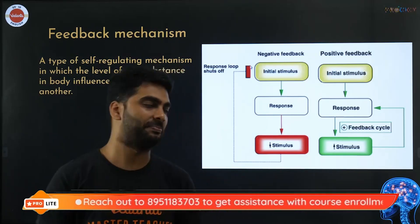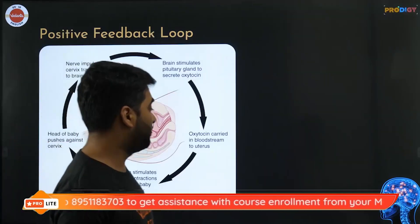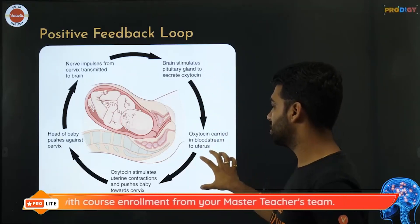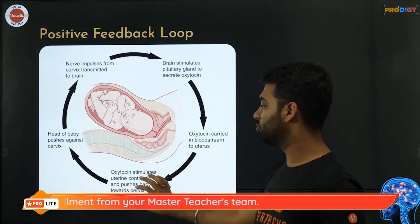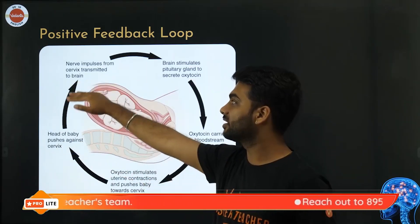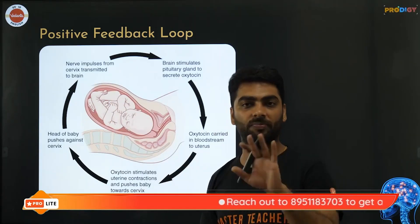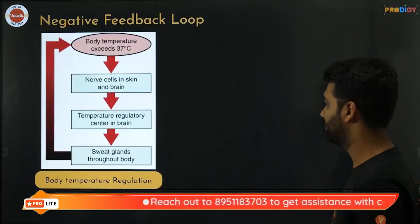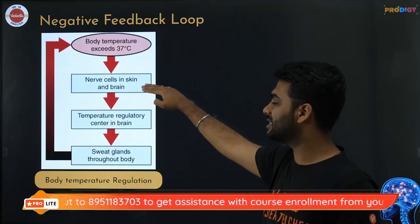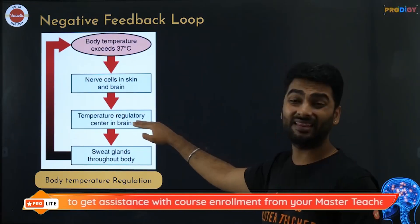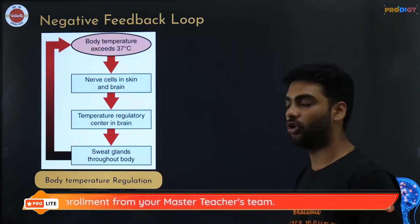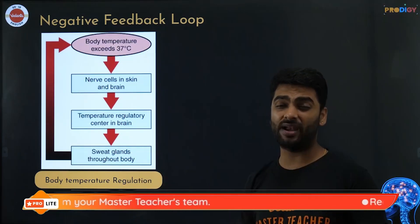For positive feedback: the brain stimulates the pituitary to secrete oxytocin, which stimulates uterine contractions and pushes the baby toward the cervix. Nerve impulses from the cervix are transmitted back to the brain, stopping oxytocin when no longer needed. Another example: when body temperature exceeds 37°C, the temperature regulatory center in the brain (hypothalamus) activates sweat glands throughout the body, and sweating brings body temperature back to normal.